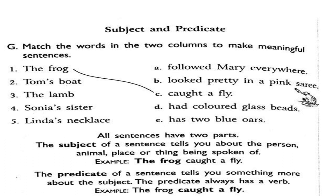Second: 'Tom's boat has two blue oars.' Third: 'The lamb followed Mary everywhere.' Fourth: 'Sonia's sister looked pretty in a pink sari.' And the fifth subject, 'Linda's necklace,' is matched with 'red-colored glass beads.' So we can draw a conclusion here: all sentences have two parts. The subject of a sentence tells you about the person, animal, place or thing — a noun or maybe a pronoun — being spoken of. The subject is placed at the first place in the word order of a statement or assertive sentence.